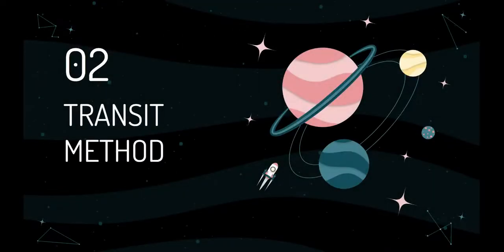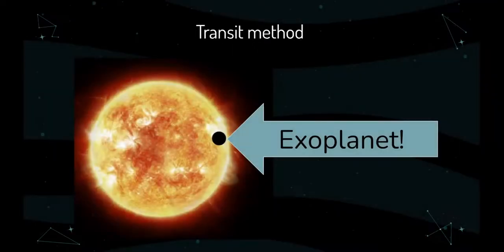Second, let's talk about the transit method. The transit method is intuitively one of the simplest ways to search for exoplanets. How much a star dims during a transit directly relates to the relative sizes of the star and the planet.